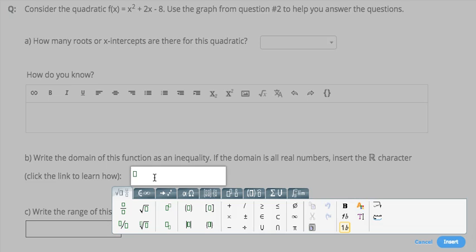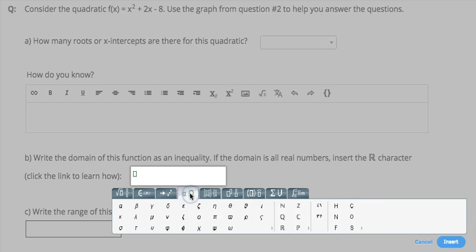Now there is a particular character that represents all real numbers. If you look here where you have the Greek alpha and omega, click on that tab and you'll see here a double struck R.